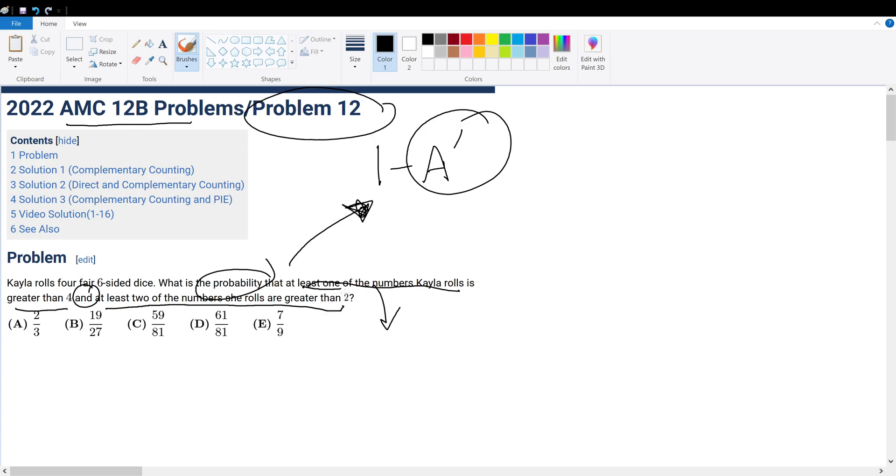Alright, to not satisfy the first condition—at least one of the numbers Kayla rolls is greater than 4—all of the numbers that she rolls has to be less than or equal to 4.